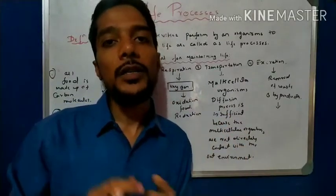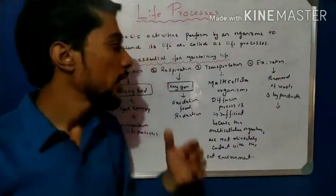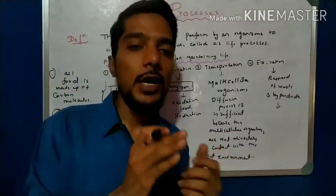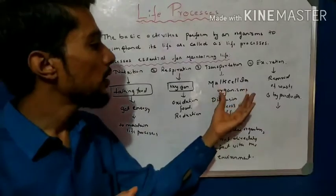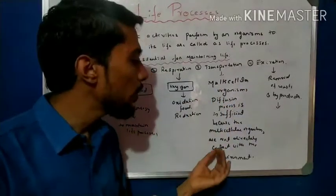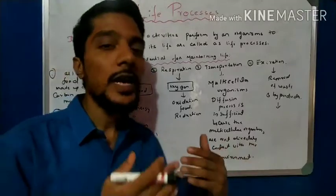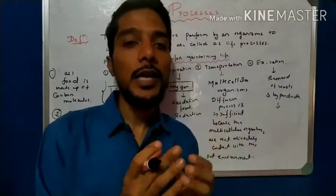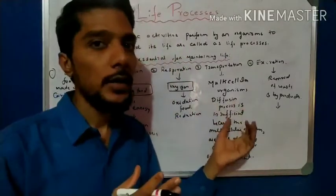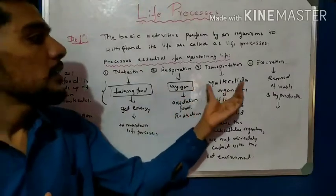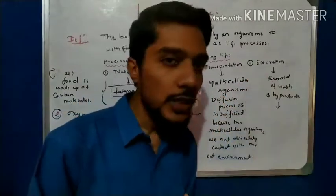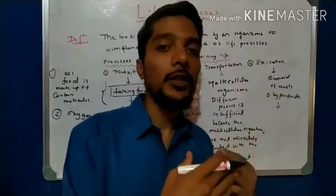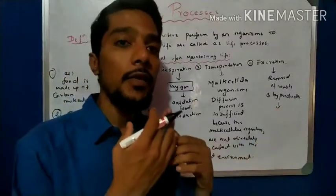In transportation, there are two types: one for unicellular organisms and one for multicellular organisms. In unicellular organisms, diffusion takes place because cells are directly in contact with the environment. In multicellular organisms, diffusion is insufficient because they are not in direct contact with the environment — they require a specific organ, the heart. In excretion, the removal of unwanted waste and byproducts from the body is done by the pair of kidneys, the anus, the small intestine, and the lungs.